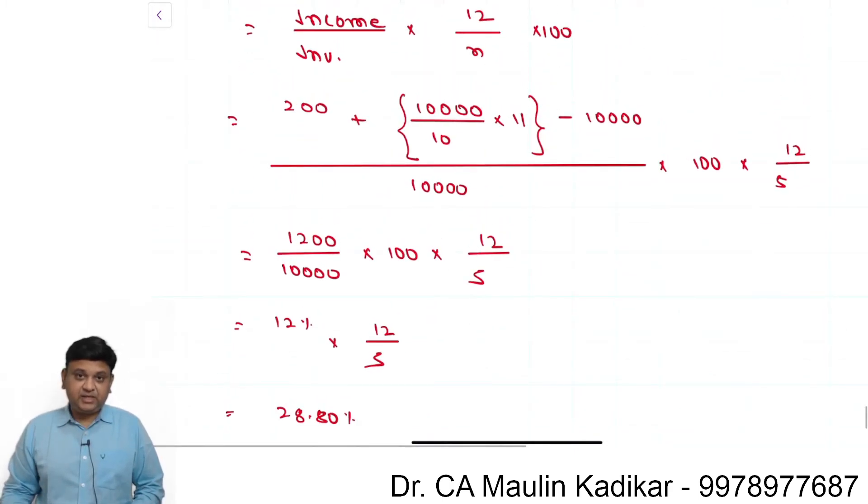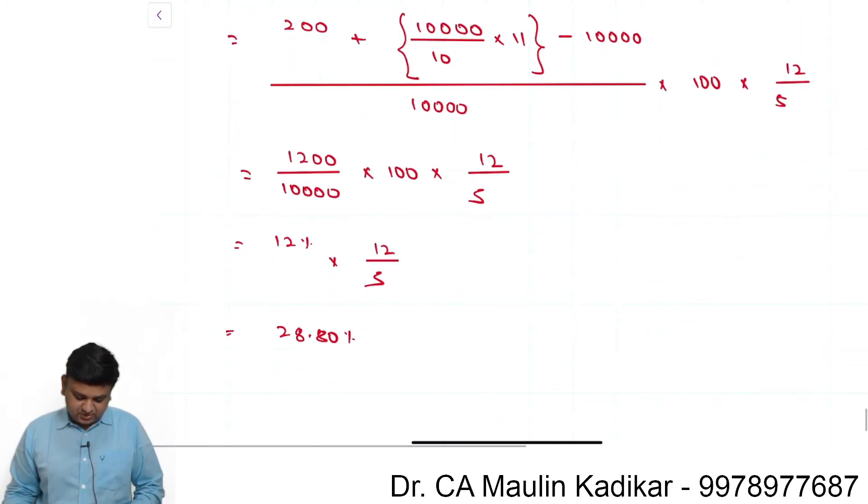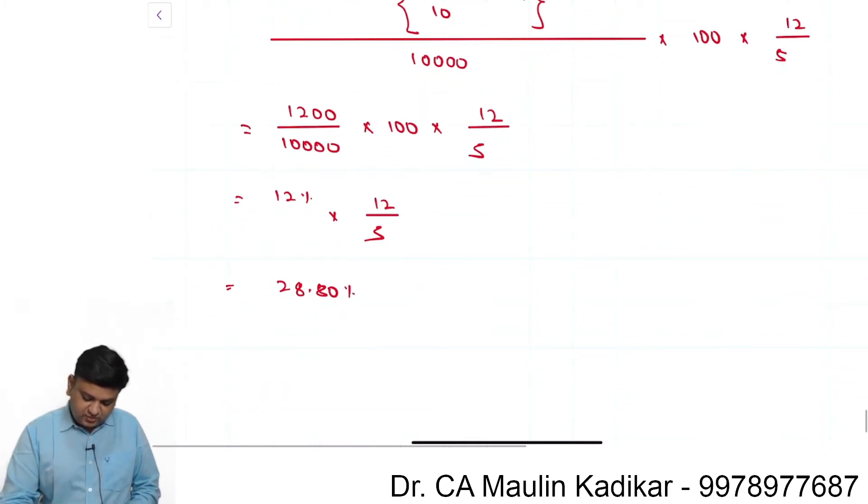This is the way we can make the computation of annualized return. Friends, this 12 percent return is called in technical language holding period return. This is given a name as holding period return.